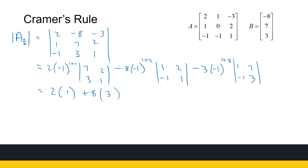Continuing, minus 3 times (-1)^(1+3) times det(1, 7 / -1, 3), which is minus 3 times (3 - (-7)), so minus 3 times 10 = -30. So I've got 2 + 24 - 30, giving me -4. That tells me Y equals -4 over 4, which gives Y = -1.